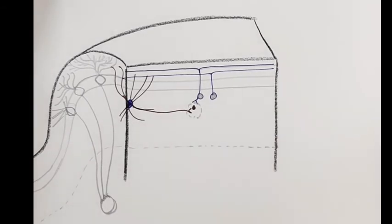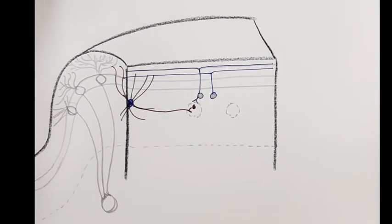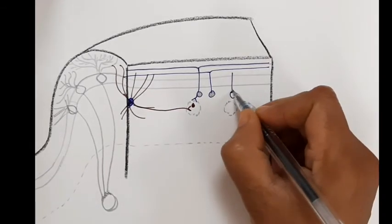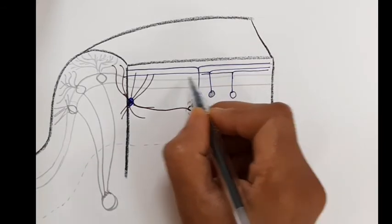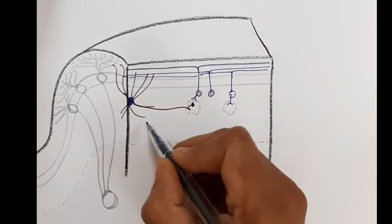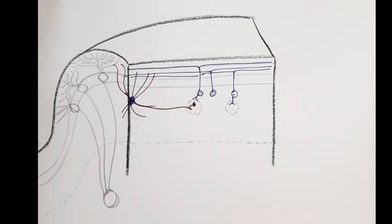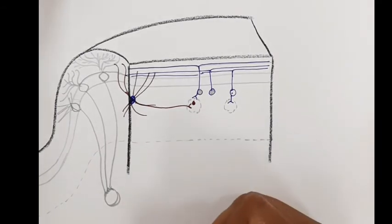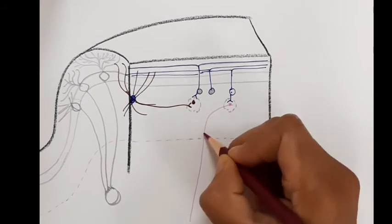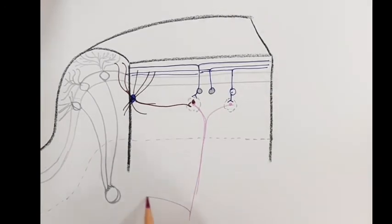The granular cell in turn synapses with the dendrites of the Purkinje cells. The climbing fiber synapses with a single Purkinje cell. Through the Purkinje cells, the climbing fiber also synapses with dendrites of basket cells and Golgi cells. The basket cell activates the Purkinje cells, which is also known as feed-forward inhibition.